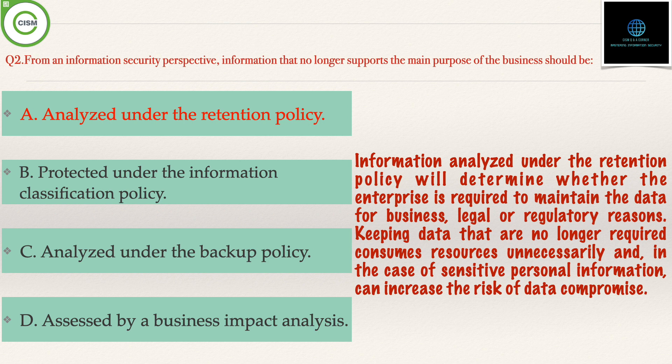Coming to Option D, assessed by a business impact analysis — this is incorrect, because while the business impact analysis could help determine whether information supports the main objective of the business, it would not indicate the action to take. That's why Option A is correct.